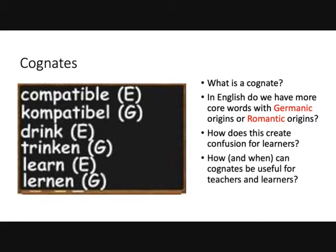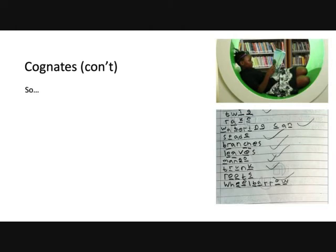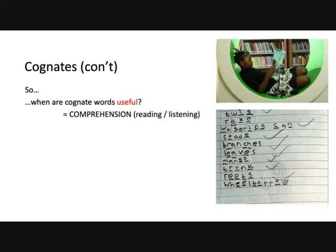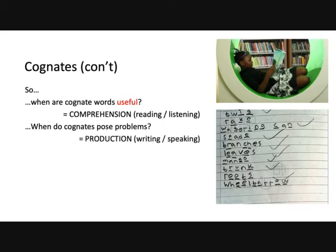Cognates can be very useful for teachers and learners, especially when it comes to reading and learning vocabulary — it's kind of like a cheat sheet. They're really useful when you're teaching learners new words that are similar in their first language, their L1. They're really useful for comprehension especially — if learners are reading texts or listening to someone speak, it's easy for them to guess the meaning. However, cognates cause problems when students are producing language, so when they're writing or speaking.